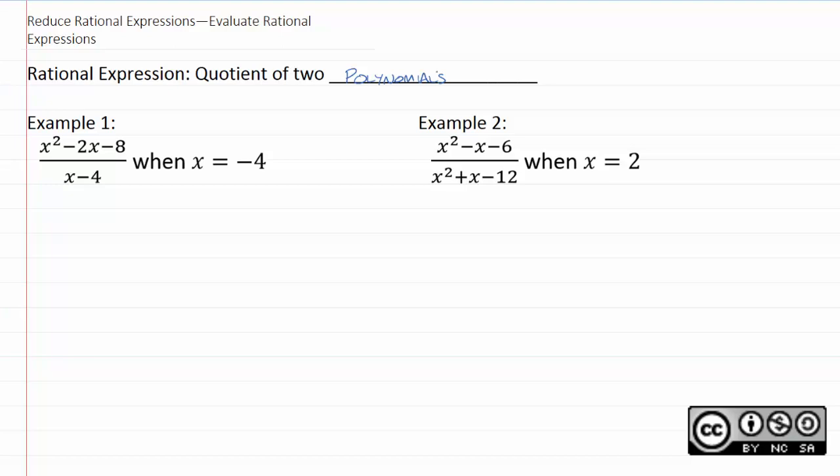So for example one, we're going to evaluate this polynomial. And to evaluate a polynomial really just means to take negative four and just put it wherever x appears.